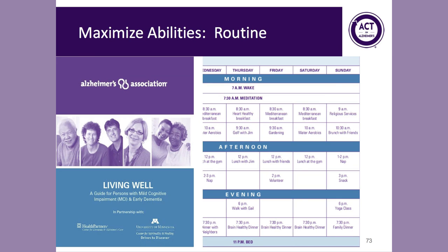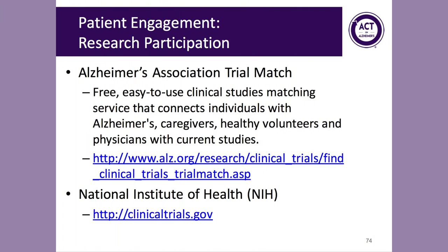For example, a patient may have a routine to have breakfast every day at 9 a.m. This structure will help support the patient when they become increasingly confused about what to do later in the illness. The family can reinforce this routine by saying, 'it's 9 a.m., time for breakfast.' Meaningful engagement and finding purpose is very important, and one way patients and families can find this is through participation in research. The Alzheimer's Association has a service called Trial Match — free and easy to use — which helps match patients and caregivers with current studies available in their area. The National Institutes of Health also has clinicaltrials.gov, though Trial Match may be easier to navigate for patients.